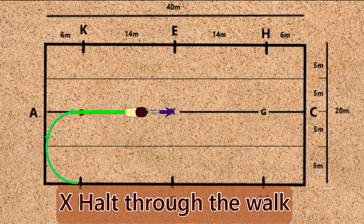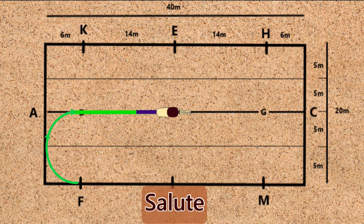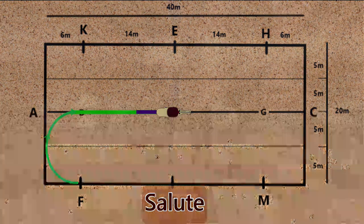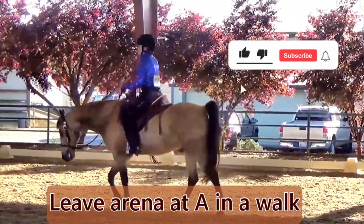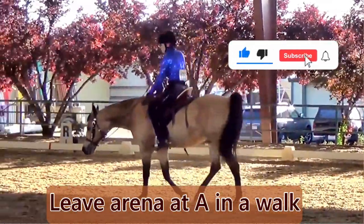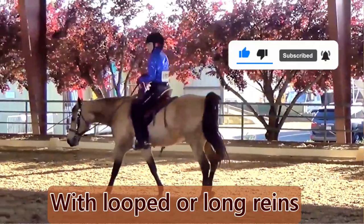Movement 15: X, halt through the walk. Movement 16: Salute. Leave arena at A in a walk with loose or long reins.